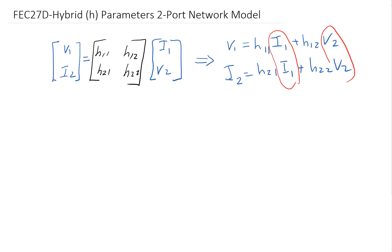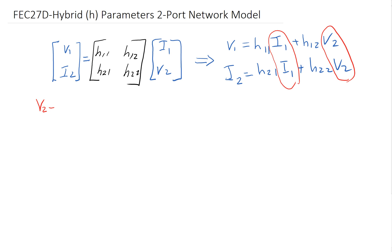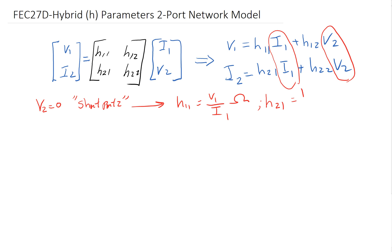Using these two equations, we either set I1 equal to 0 or set V2 equal to 0, meaning we either open port 1 or short port 2. If V2 equals 0, we are shorting port 2. The terms with V2 go away, giving us H11 equals V1 over I1, which is in ohms. We also get H21 equals I2 over I1, which is amps over amps — unitless.